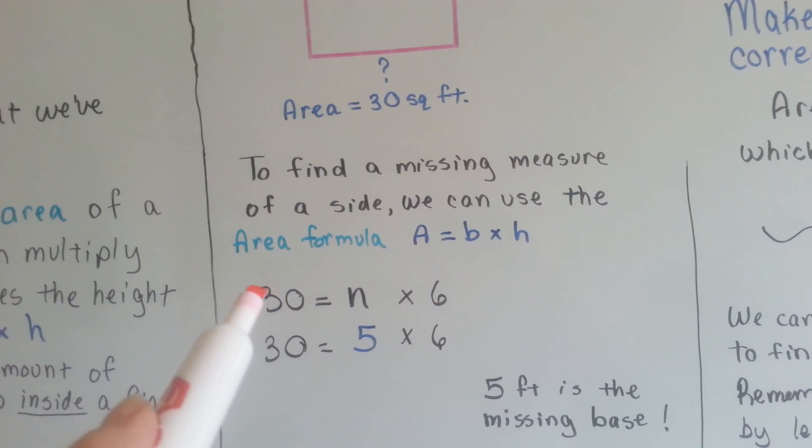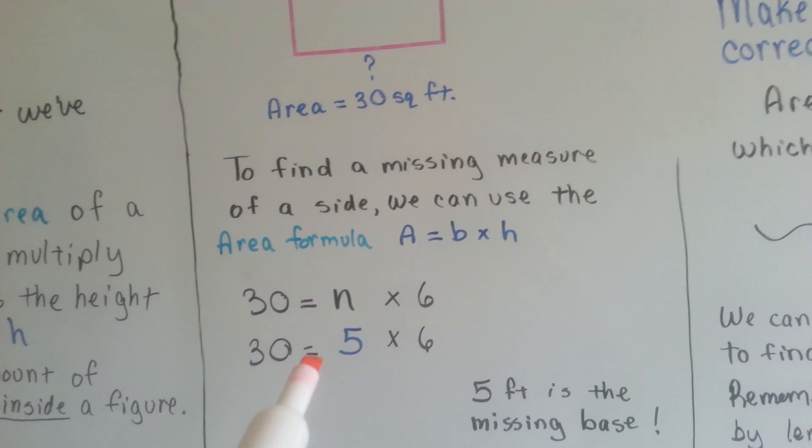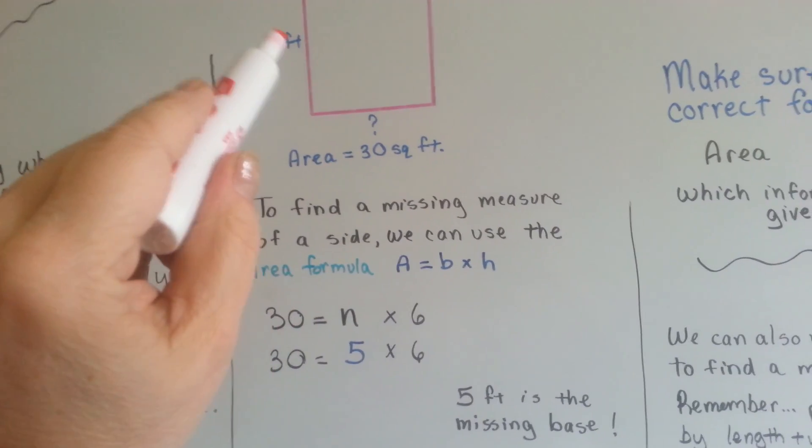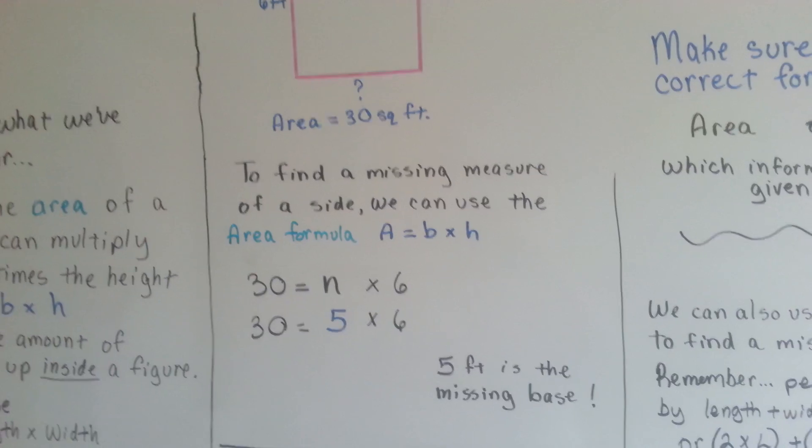What times 6 is 30? 5. 30 is equal to 5 times 6, so 5 feet is the missing base, because it's in feet. That was easy, wasn't it?